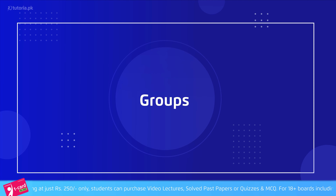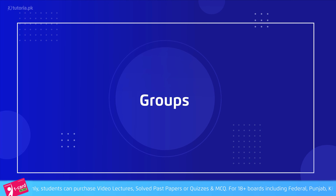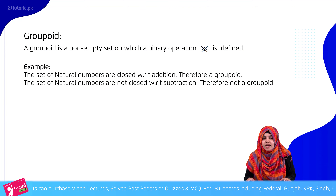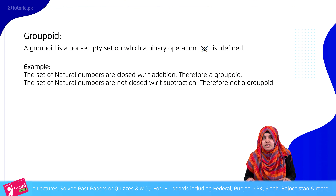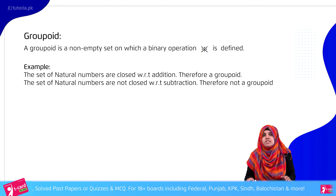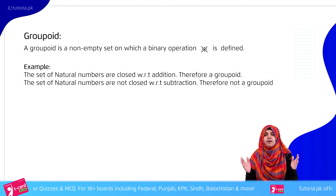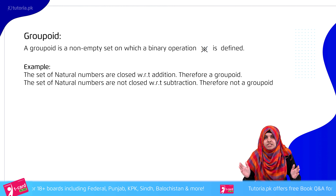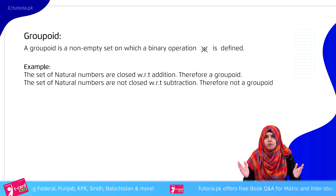The first concept in Group Theory is Groupoid. A Groupoid is a non-empty set on which a binary operation is defined. Binary operations include addition, subtraction, multiplication, and so on.